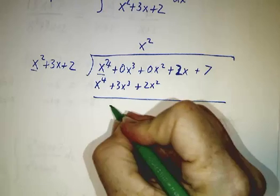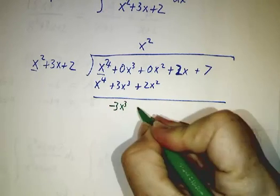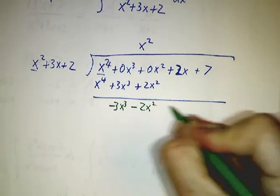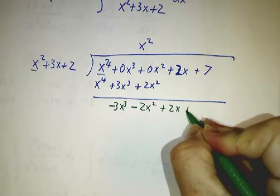And we get negative 3x cubed minus 2x squared plus 2x plus 7.